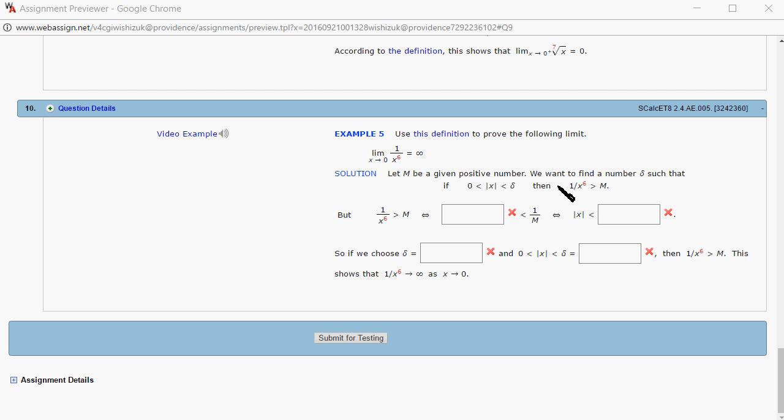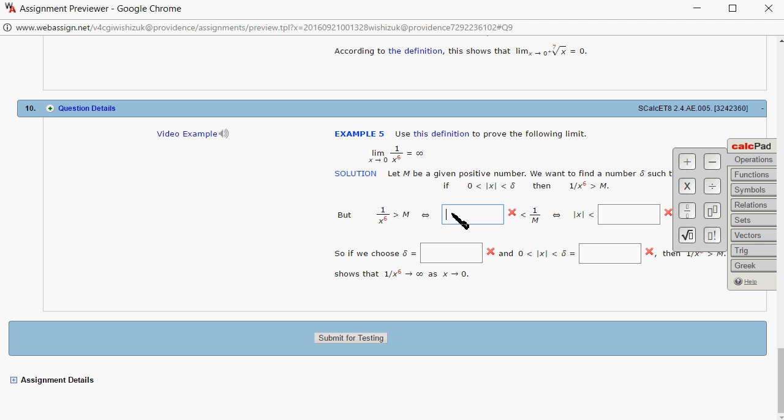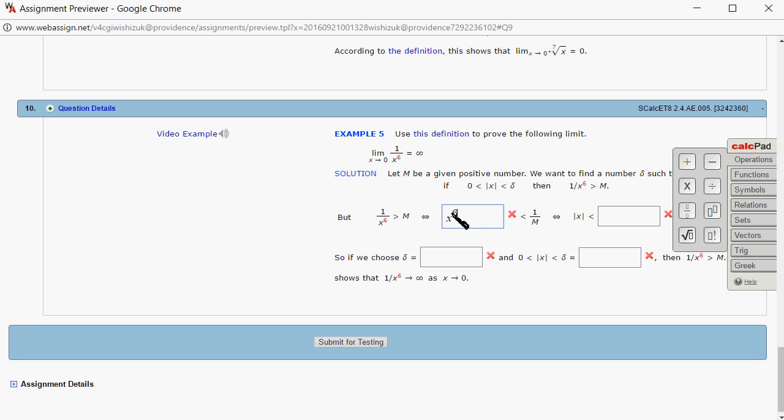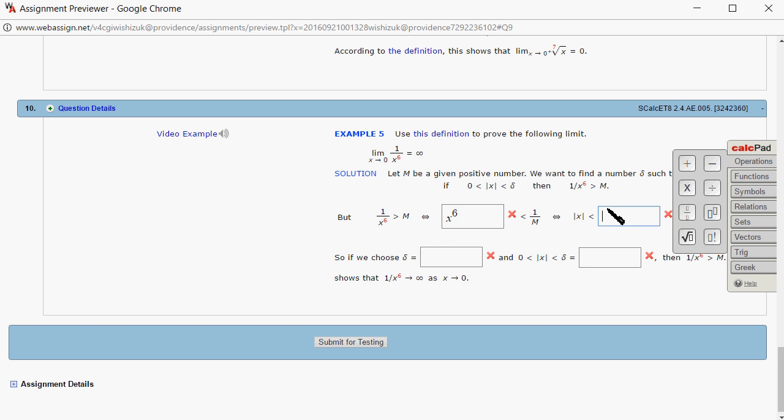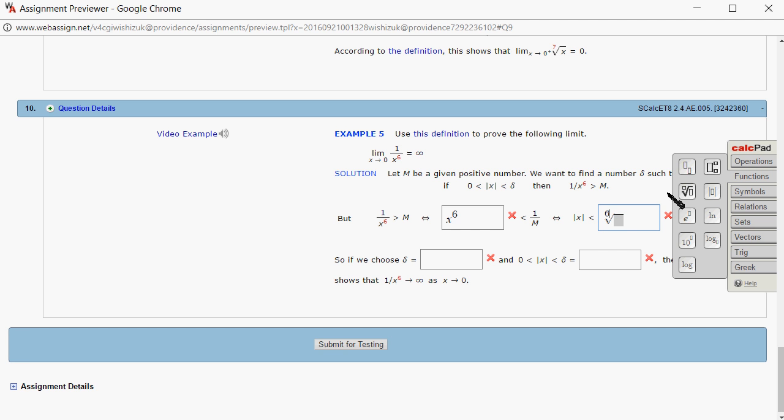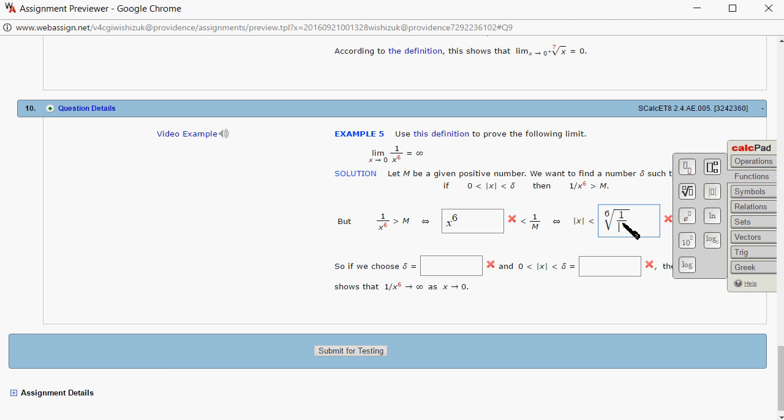Alright, so start with 1 over x to the 6th greater than m. This is scratch work here. Taking the reciprocal, we have x to the 6th power less than 1 over m. Then taking the 6th root of both sides we get the 6th root of x to the 6th, which is absolute value of x, less than the 6th root of 1 over m.